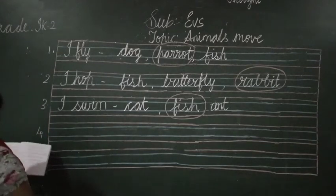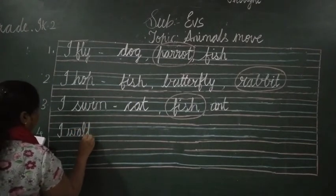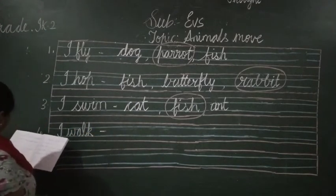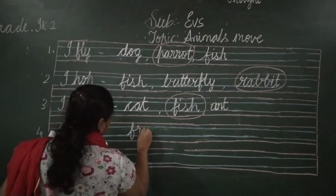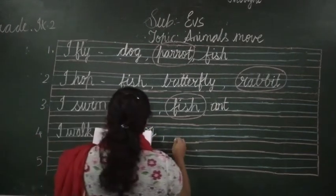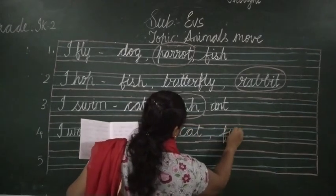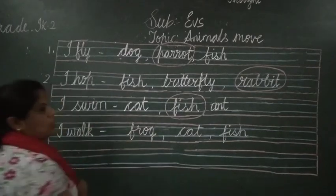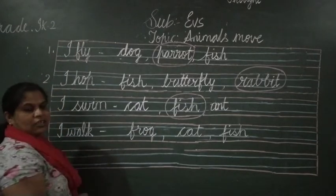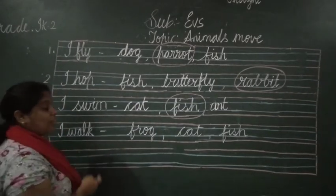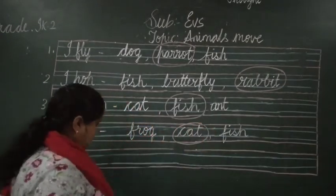Coming to the fourth one: 'I walk.' Which animal walks? The options are frog, cat, and fish. What is the movement of each? Frog hops. Cat walks. Fish swims. So cat walks - you have to circle cat.